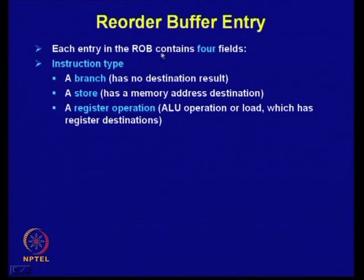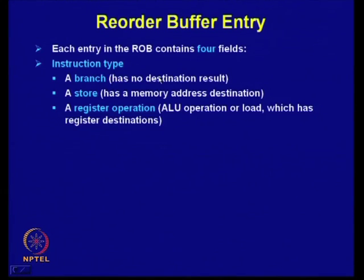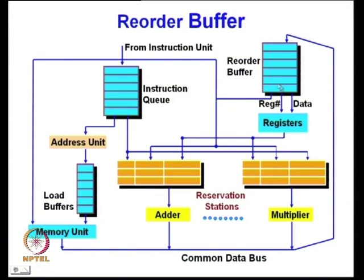Each entry in the reorder buffer contains four fields. The first field is instruction type, broadly divided into three categories: branch (no destination result), store (has a memory address destination), and register operation, which covers ALU operations or load (they have register destinations). ALU operations and loads are similar in that they write to registers, while stores write to memory.